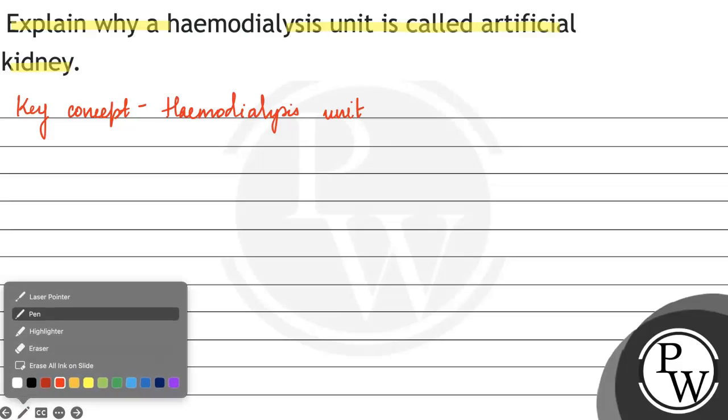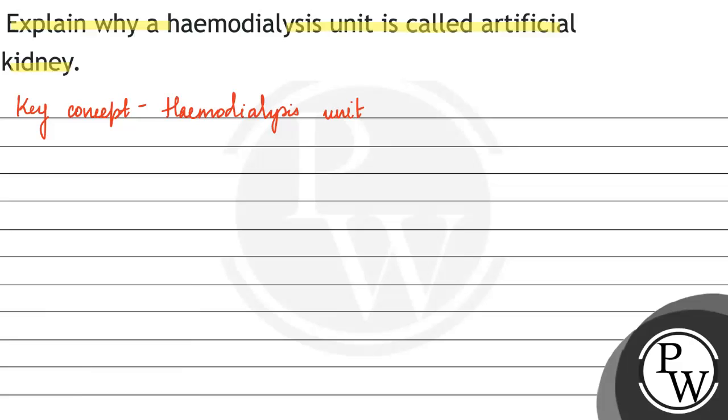First, we will see why this is called an artificial kidney. If we look at the kidney, which is part of our excretory system, what is its main work? To filter the blood. The main work of the kidney is the filtration of blood.